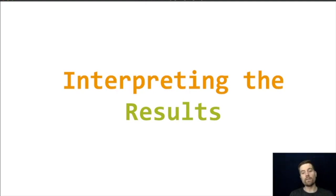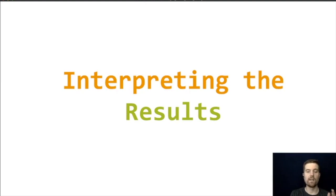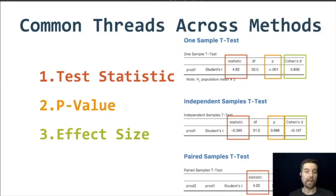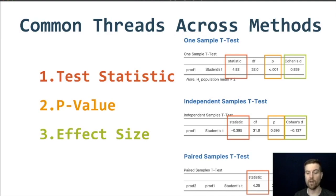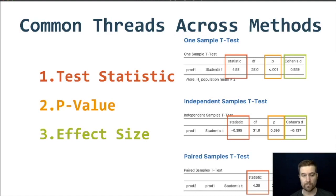That was section one — selecting the right approach. The second part is interpreting the results, which is one of the two main things I want you to walk away from this class with. Each of these methods has common threads: a test statistic, a p-value, and an effect size. For t-tests, the test statistic is a t-value and the effect size is Cohen's d. The p-value always means the same thing: if it goes below 0.05, that's generally our threshold to reject the null hypothesis.